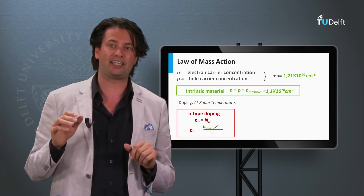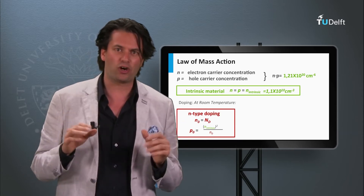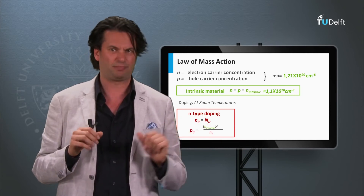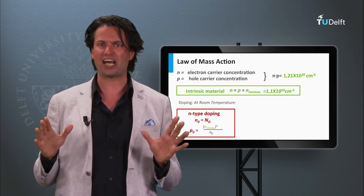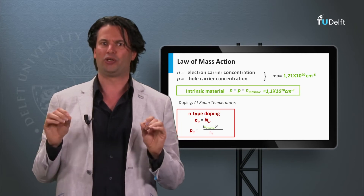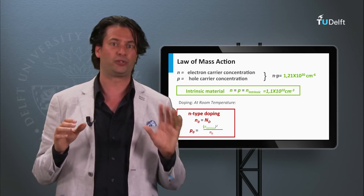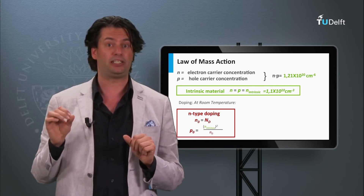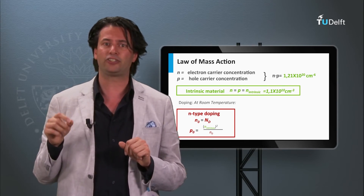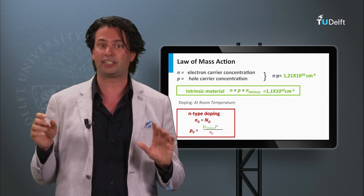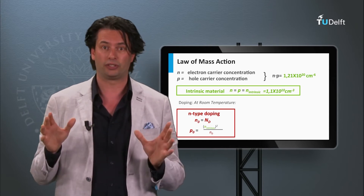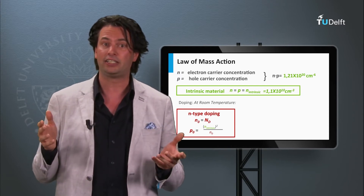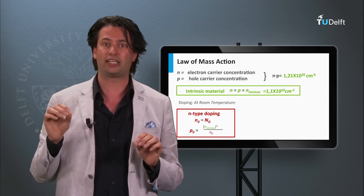Now we consider an n-doped silicon material. We incorporate a density of phosphorus atoms in the lattice, which we call N_d. We assume that all donors give a free electron to the lattice, so the electron density n0 is equal to N_d. Now we can calculate the hole density p0. The law of mass action tells us that at a given temperature, the product of the electron density and the hole density is constant, independent of doping. So p0 is equal to the square of the intrinsic charge carrier density divided by the electron density n0.